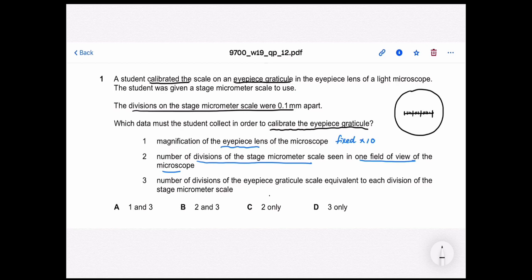Like for example, if this is your eyepiece and your stage micrometer, it has like about four divisions. So, do I really care how many divisions are there? It actually doesn't really matter.